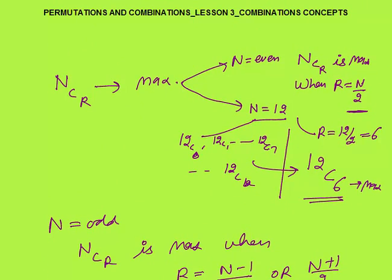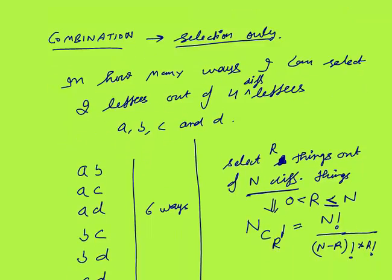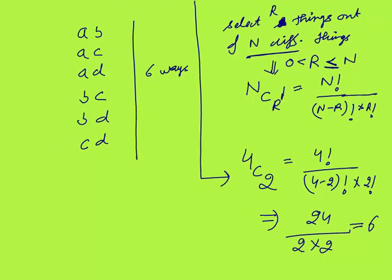So that was all about the concept of combination. Briefly revising: when I say combination, it means selection only. If you need to select R things out of N different things, where R is greater than 0 and less than or equal to N, then the formula will be NCR. This formula is only applicable when the N things are different; otherwise, we have separate methods that I will cover in upcoming lessons. Thank you.